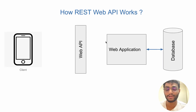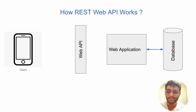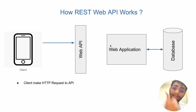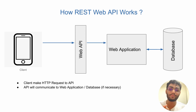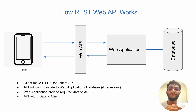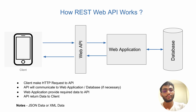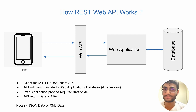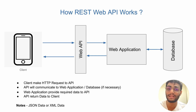Let's understand the components. There is a client, a web application, a web API, and a database. The client makes an HTTP request to the REST API, and the API communicates to the application, which accesses the database if needed. Then the application provides the required data to the API, and the API brings that data back to the client side. One thing to note is that the data is in JSON or XML format, but in most scenarios we use JSON, not XML. In later explanations, we'll be demonstrating with the help of JSON data.